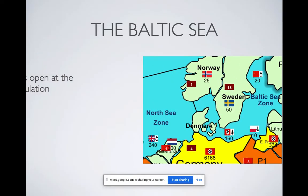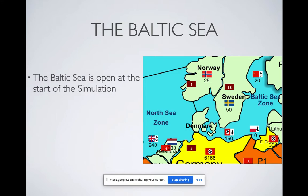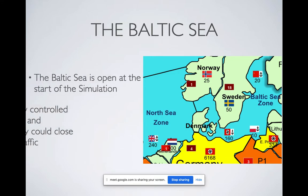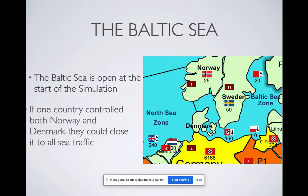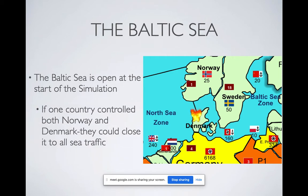The Baltic Sea is an important part of this simulation. It is open at the start. If one country were to control both Norway and Denmark, they could close off the Baltic to navies from getting in there. The British have a much larger naval force, so if Denmark and Norway fell to the Germans, Great Britain would not be able to get into the Baltic. You have to control both of those, otherwise it's open.